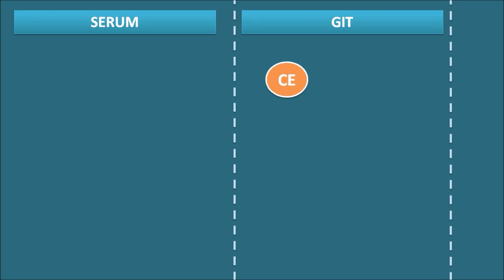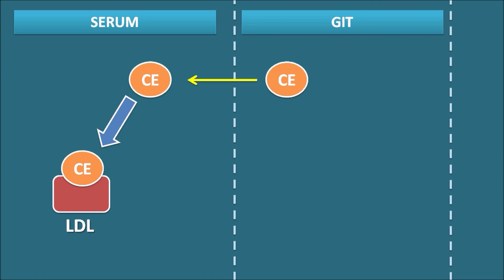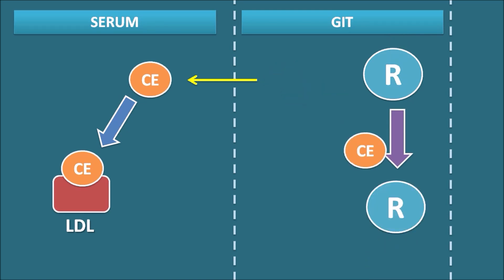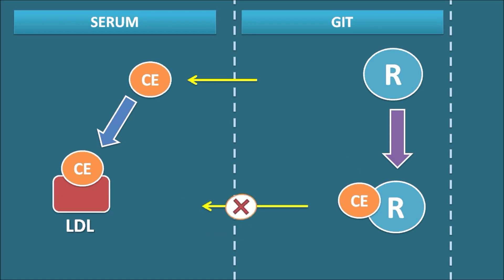Consider the GIT and the serum: normally, cholesterol converted into cholesterol esters is absorbed from the GIT into systemic circulation. Once in the serum, these cholesterol esters are bound as LDL cholesterol. LDL is called bad cholesterol, and when levels are abnormally elevated, they increase the risk of atherosclerosis. When cholestyramine resin is given, it binds with bile acids rich in cholesterol, forming an insoluble complex that cannot be absorbed, thereby preventing cholesterol absorption.